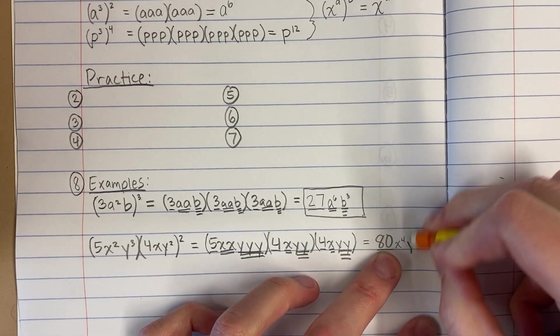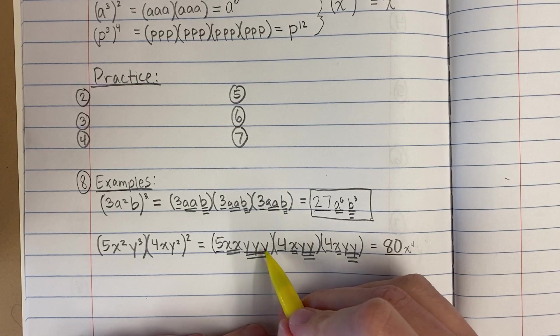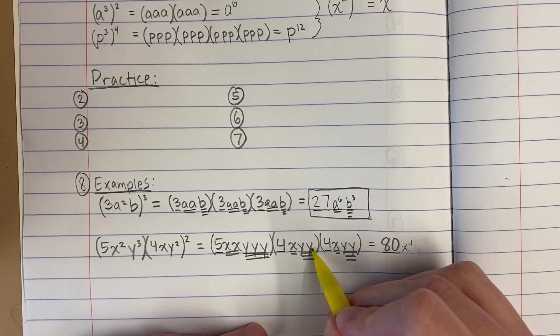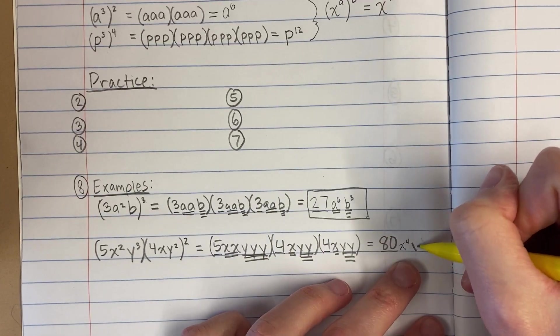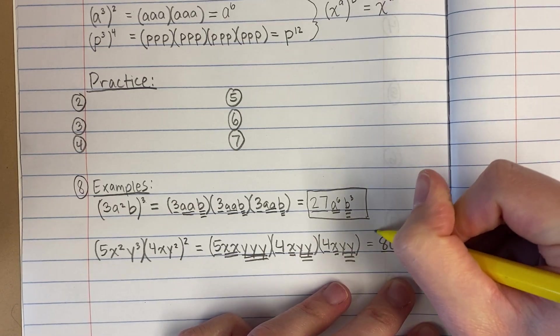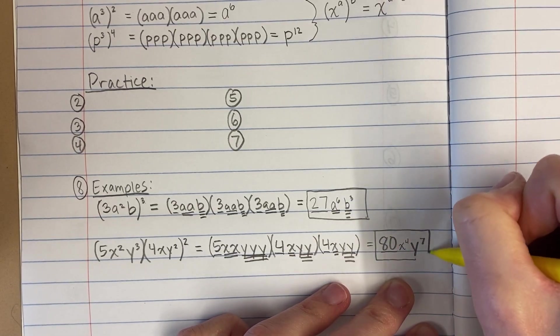Oops, sorry, let me count those. It's 1, 2, 3, 4, 5, 6, 7. Sorry about that. And here is my answer.